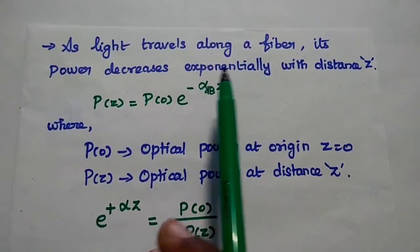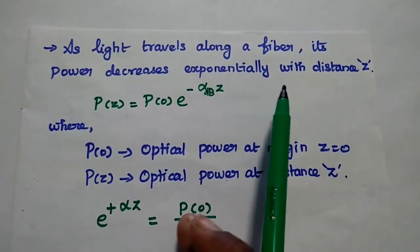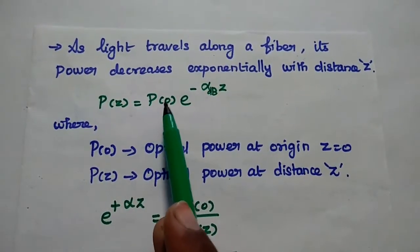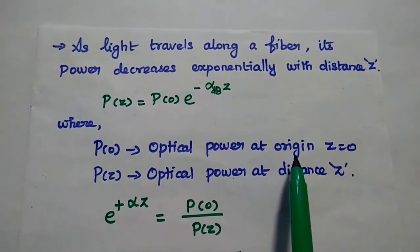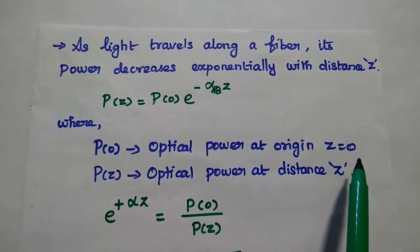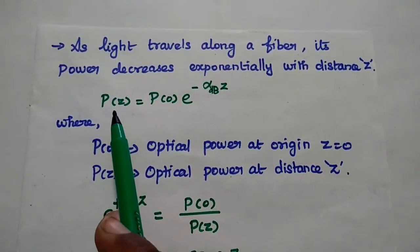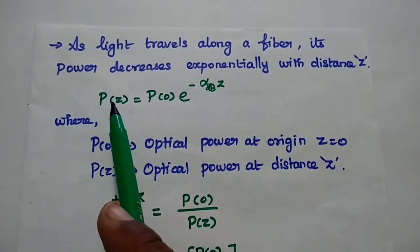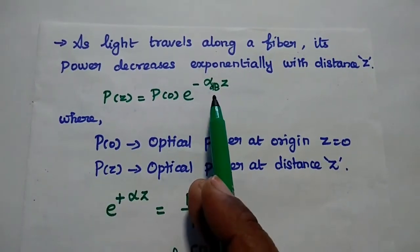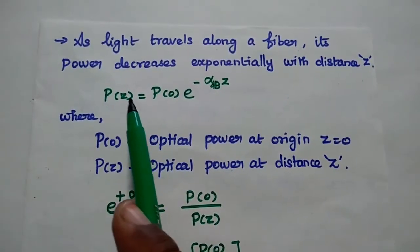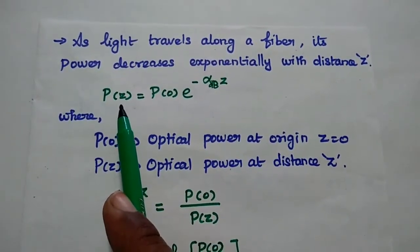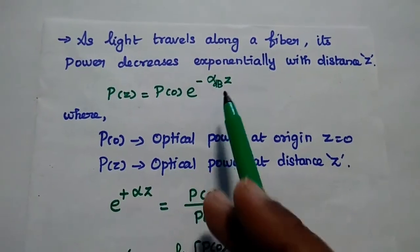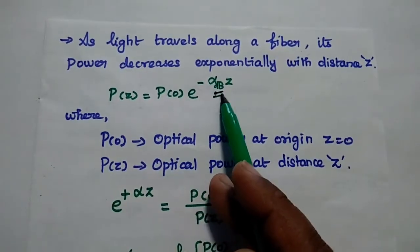As light travels along a fiber, its power decreases exponentially with the distance Z. Here P(0) is the optical power at origin where Z equals 0, and P(Z) is the optical power at distance Z. This power decreases exponentially with distance Z, expressed as: optical power at distance Z equals the initial power multiplied by e to the power of minus alpha Z. From this we can find out the value of attenuation.